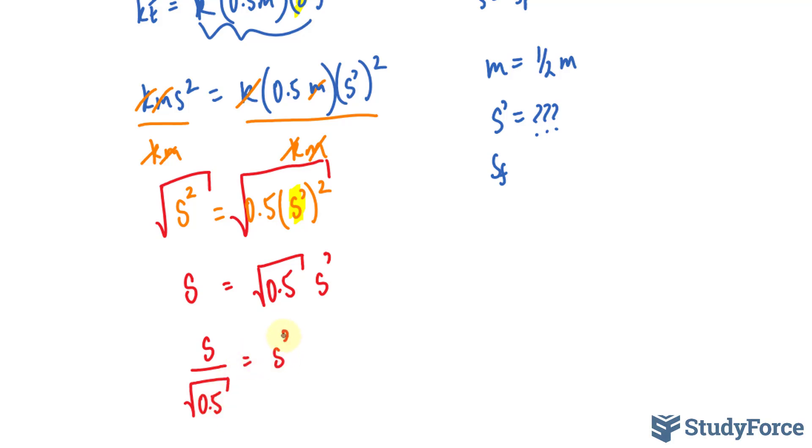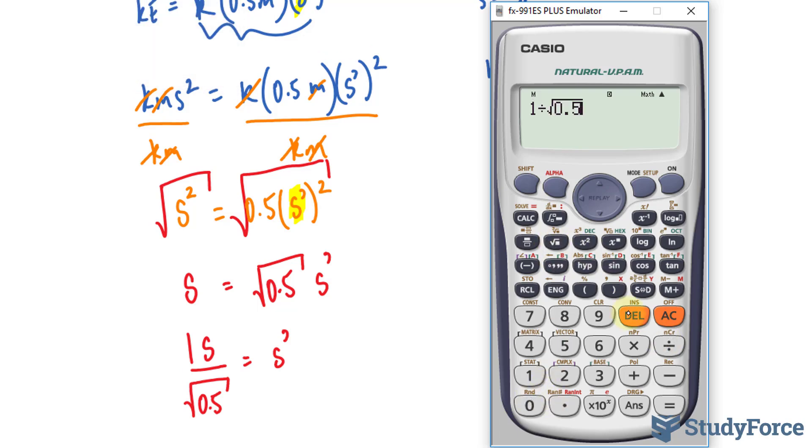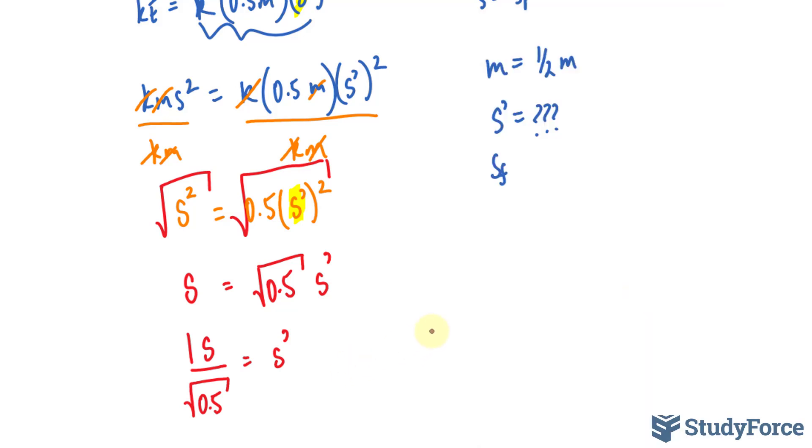So let's find out how we have to change the speed for the kinetic energy to be the same. I'll use my calculator, and remember, this S over the square root of 0.5 is the same thing as saying 1 over the square root of 0.5. So using our calculator, 1 divided by the square root of 0.5 gives us the square root of 2, which is equal to approximately 1.41.